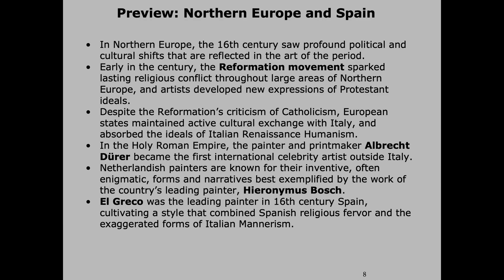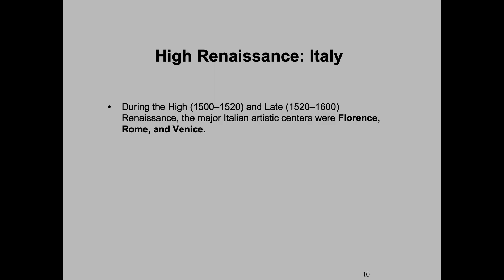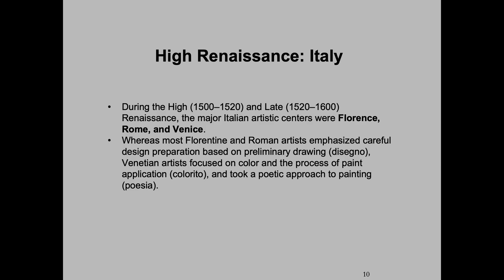The High Renaissance spans 1500 to 1520, and the Late Renaissance 1520 to 1600. The major Italian artistic centers were Florence, Rome, and Venice. Whereas most Florentine and Roman artists emphasized careful design preparation based on preliminary drawings — this idea of disegno — Venetian artists focused on color and the process of paint application, taking a very poetic approach to painting.